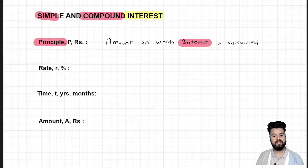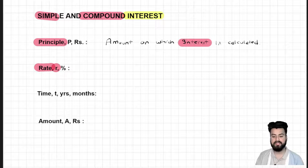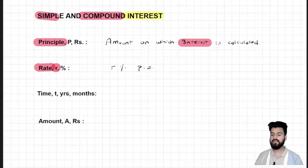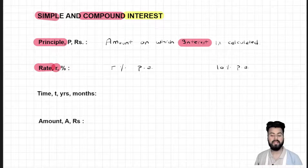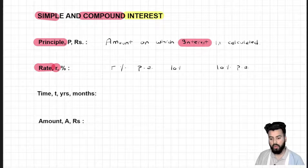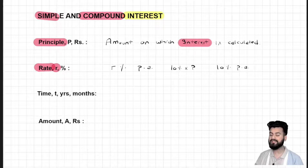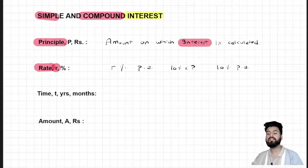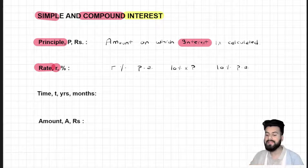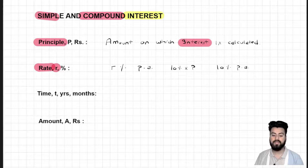The second factor on which interest is dependent is rate, usually denoted with R, and represented in percentage terms on a per annum basis. So let's say the rate of interest is 10% per annum. That means I have to pay an interest of 10% on the principal — the amount I have borrowed from the bank. If I borrowed 1000 rupees, I have to pay 10% of 1000 as interest. Likewise, if I lent my money to the bank, the bank has to pay me 10% on my money.